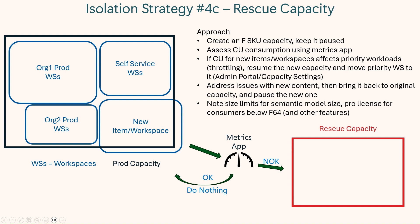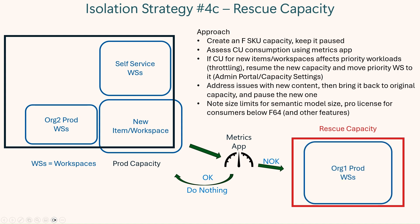The third variation is a rescue capacity, which you can also pause when not in use. If you start to see new content threatening your prod workloads, in this case you just move the prod stuff to the rescue capacity. You may still have some burndown to clear the overage on the original capacity, but your prod workload gets a fresh set of compute units and should work just fine. This has been a brief video sharing strategies on how you can leverage multiple capacities to protect your priority workloads in Fabric.